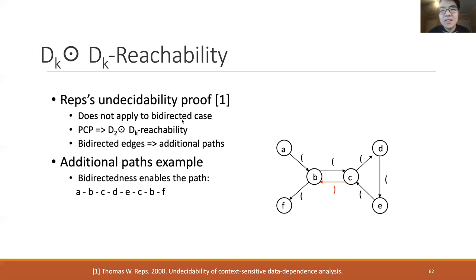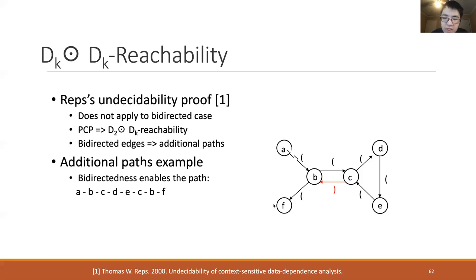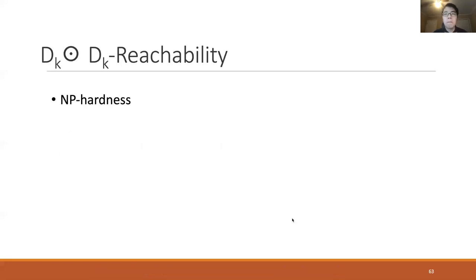The complexity for bi-directed DkDk reachability remains unknown. We provide an example to illustrate how bidirectedness introduces additional paths. In the bi-directed graph, the following path is possible: A to B, to C, to D, to E, and back to C, and then to F. However, in the directed graph this is not possible because this path is enabled by the reverse edge from C to B.